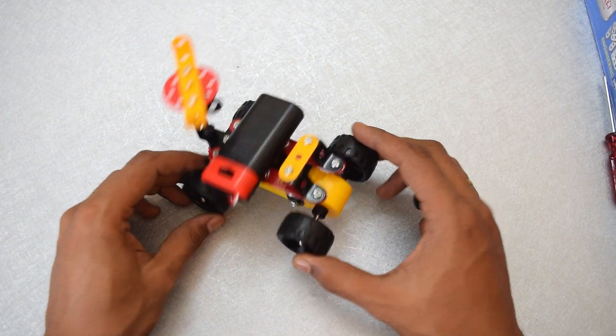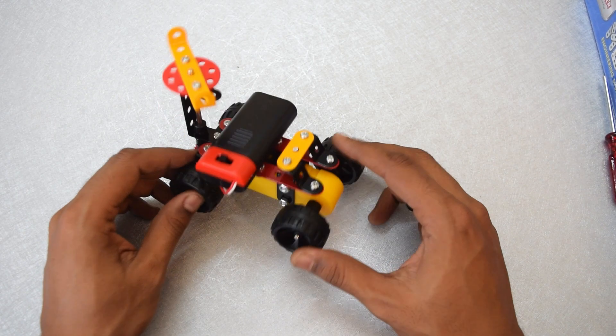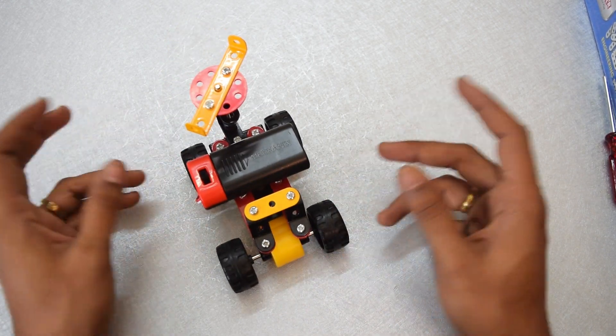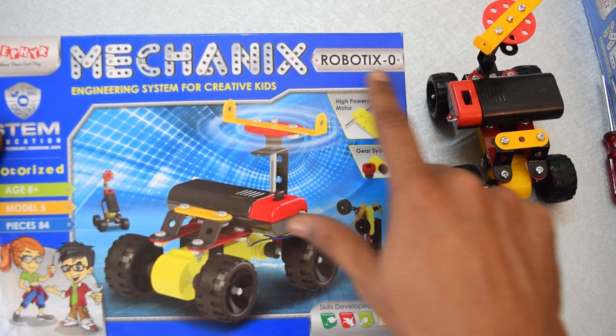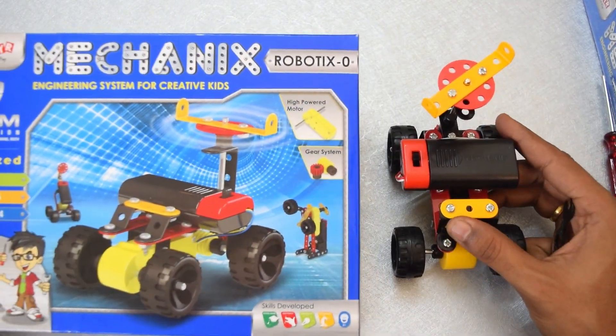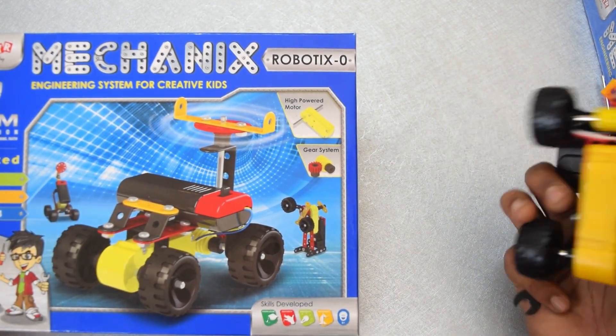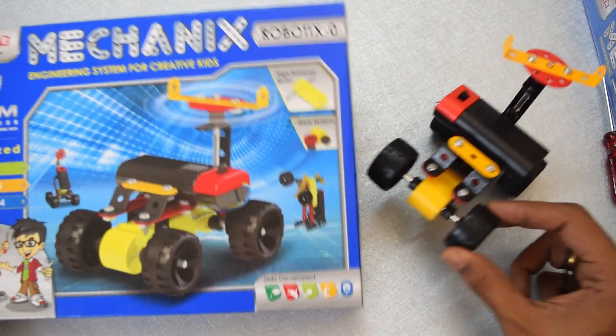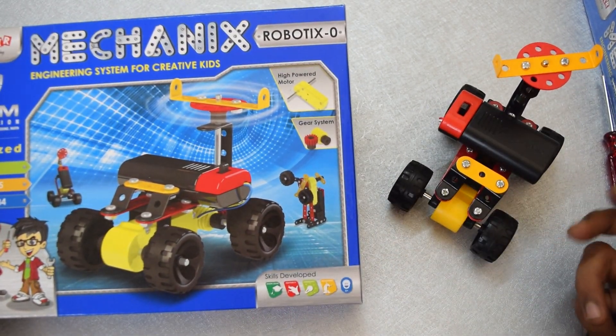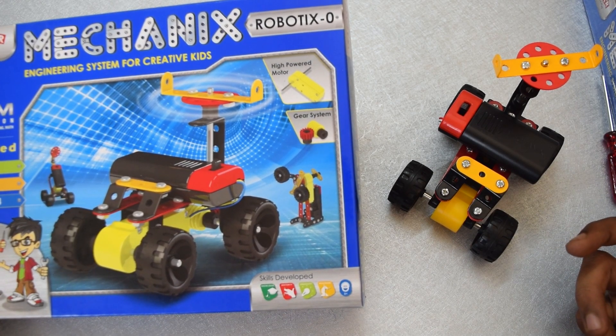So you could call this a basic robotics kit from the manufacturer Zephyr. And it comes in the mechanic series and it is mentioned as robotics zero. So this is a basic introduction into robotics series. This has a battery holder and the motor as well. The motor is really torquey and it's a nice activity for kids who are getting into robotics or electronics.